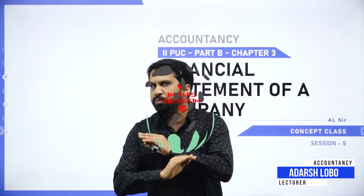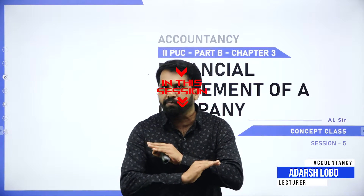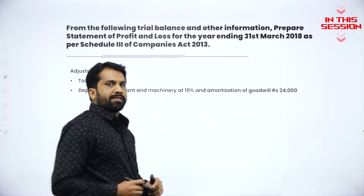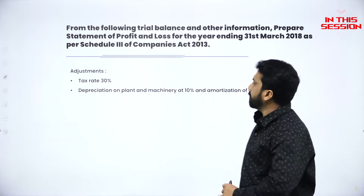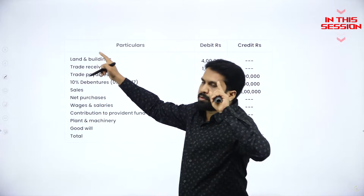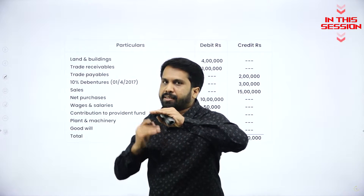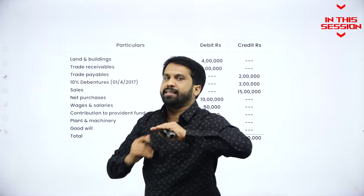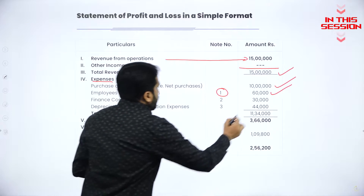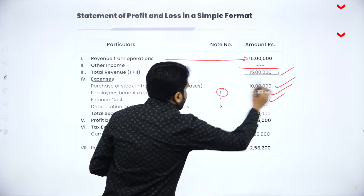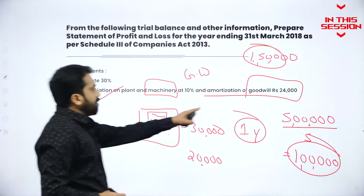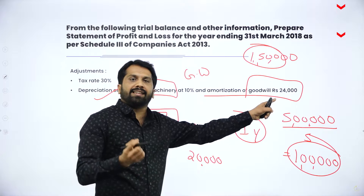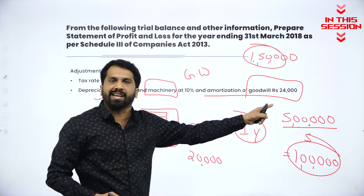All kinds of adjustments we will complete today. They have given additional information: revenue from operations, other income, total income, finance cost is 30,000. Working note number two, amortization, they have given directly — it is 24,000.